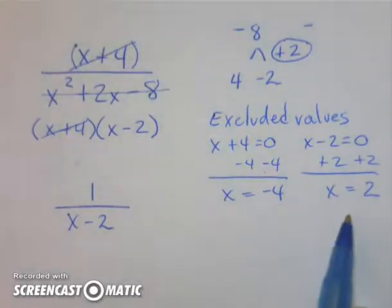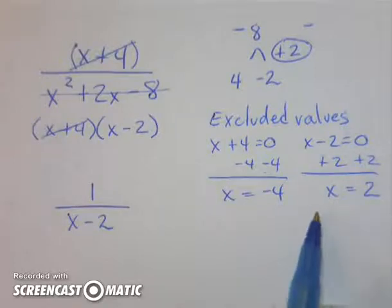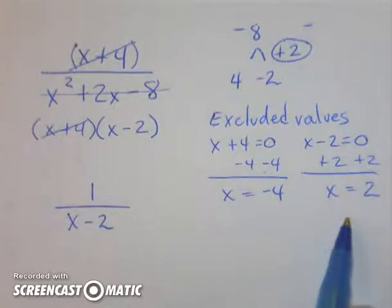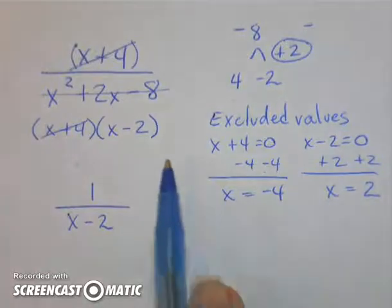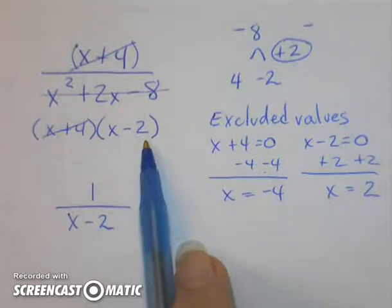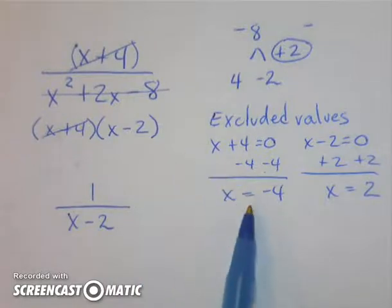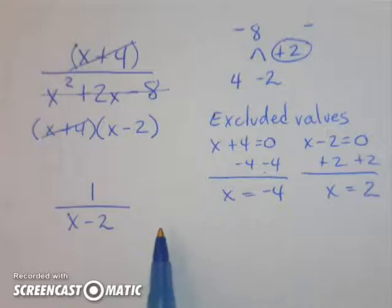These excluded values give me other information, but to find the excluded values, I will set the denominator, I will factor it, and then set each factor equal to zero, and solve. This is simplifying a rational expression and finding excluded values.